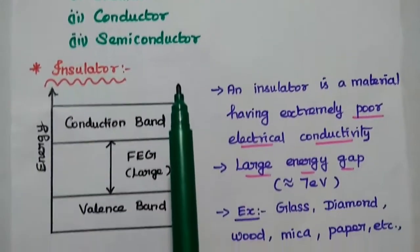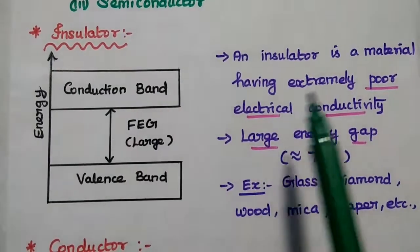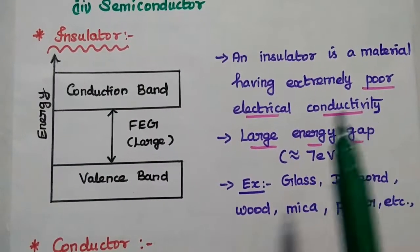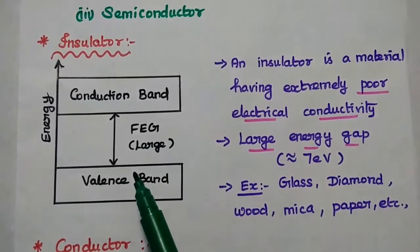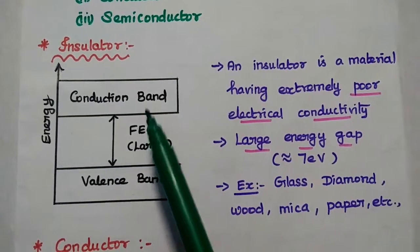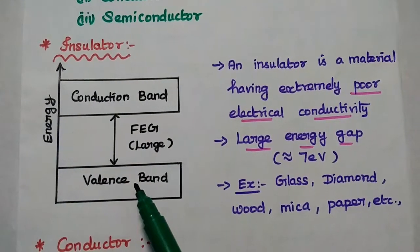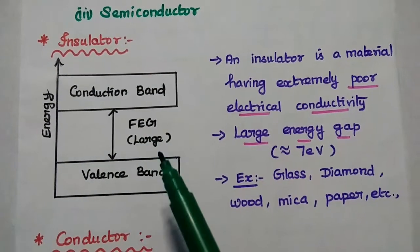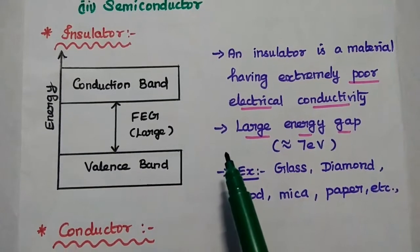Insulator is a material which has extremely poor electrical conductivity. Since it has a very large energy gap between the valence band and conduction band, it is not possible for electrons to move from the valence band to the conduction band due to this large energy gap. So this type of material cannot conduct.